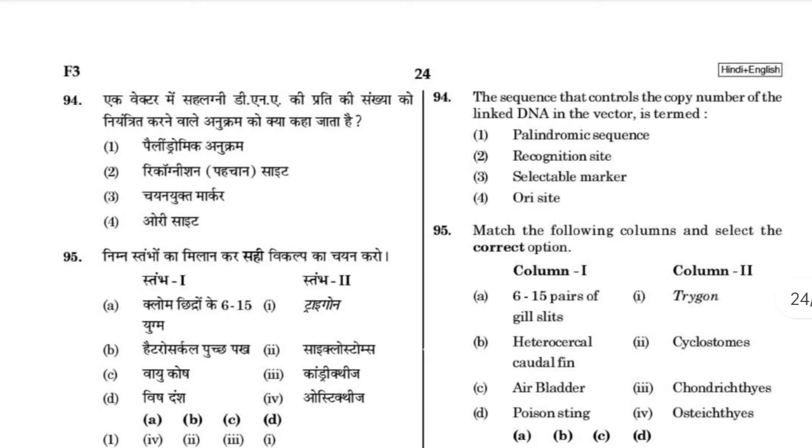The sequence that controls the copy number of the linked DNA in the vector is termed as the ori (origin of replication) of the linked DNA vector.